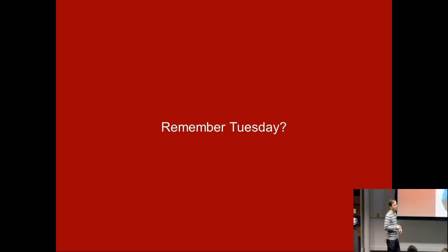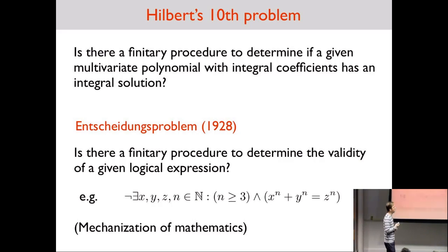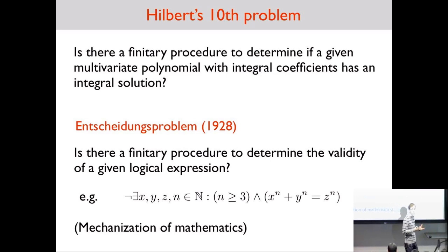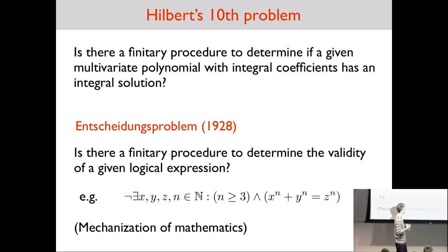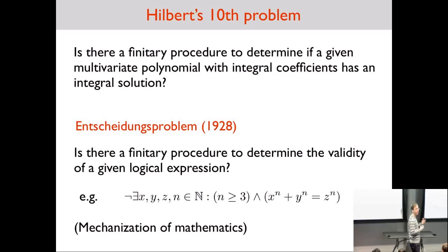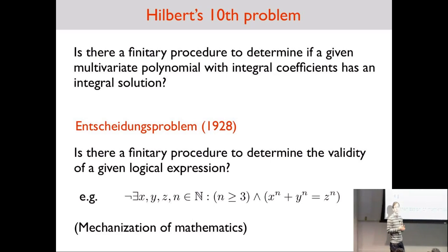If you remember David Hilbert and Tuesday's lecture, Anil told you that in the history of computation, it all started with the formal definition of what it means to compute something and what the formal definition of an algorithm was. This was motivated by a problem proposed by Hilbert called the Entscheidungsproblem, which asked: given a logical formula, is there an algorithm that can determine whether it's true, valid, or provable?